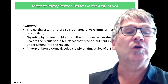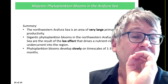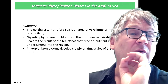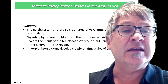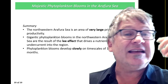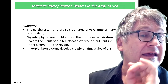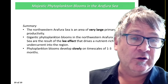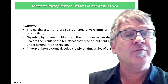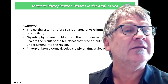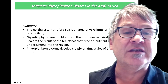Phytoplankton blooms develop slowly on timescales of 1 to 3 months. You need to understand the definition of shallow water in order to understand this process. Classical Ekman layer theory fails to explain these features in shallow water. First of all, the true depth is relatively shallow — only 50 to 100 meters deep. But it's also located closer to the equator, which weakens the Coriolis effect.